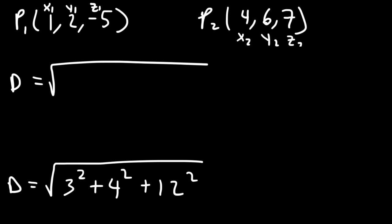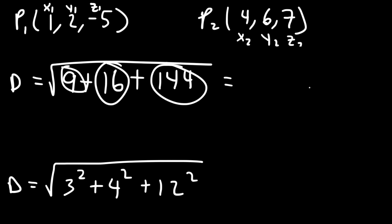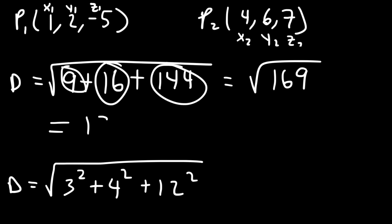3 squared is 9, 4 squared is 16, and 12 squared is 144. Now 144 plus 16 is 160, plus 9 gives us the square root of 169, which works out to be 13.